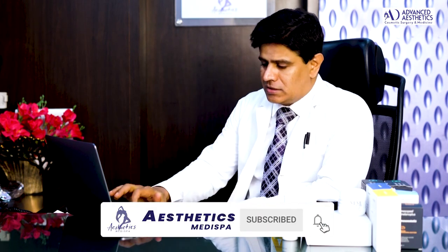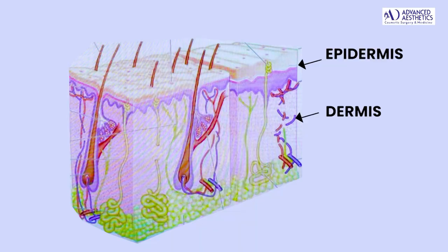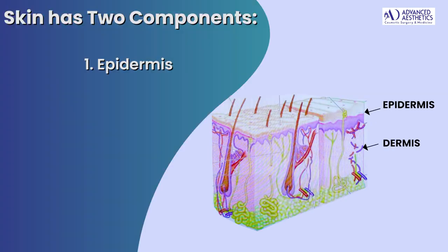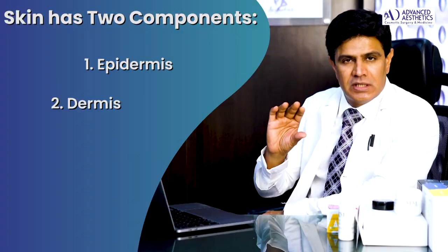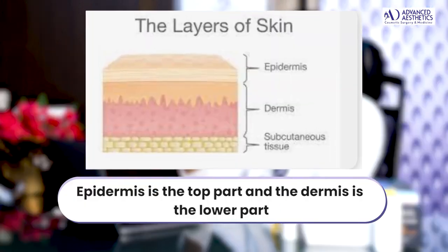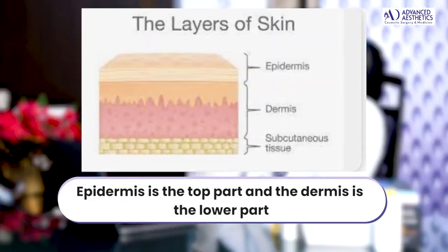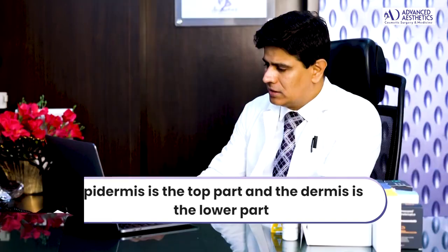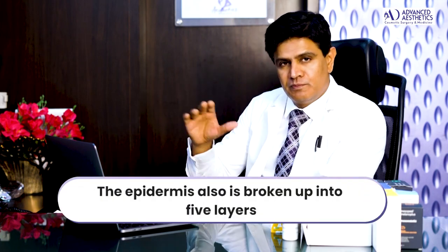As you all know, if we look at this screen here, skin has two components: epidermis and the dermis. These two together make the skin. Epidermis is the top part and the dermis is the lower part. If we look at the histology of the epidermis, the epidermis is also broken up into five layers.